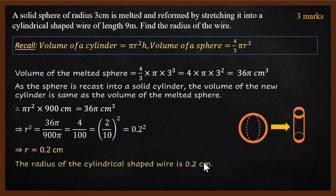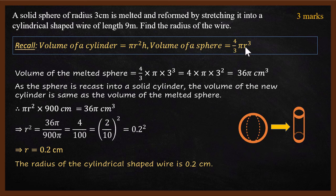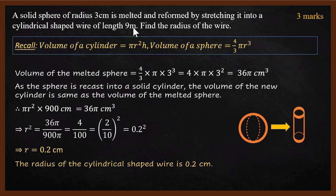So what are the important things in solving this problem? First, you need to know the formula of the cylinder's volume and sphere's volume. Second, as the sphere is recast into a solid cylinder, the volume of the cylinder is the same as the volume of the melted sphere. Third important part is you have to pay attention to the units. It is centimeter and meter there. If you don't pay attention, you will get a wrong answer.